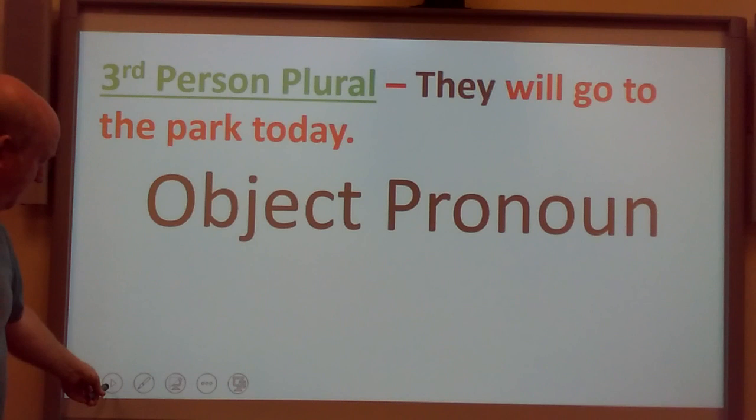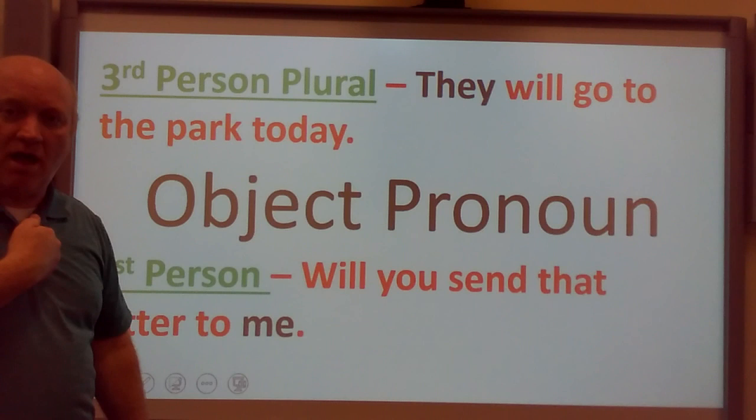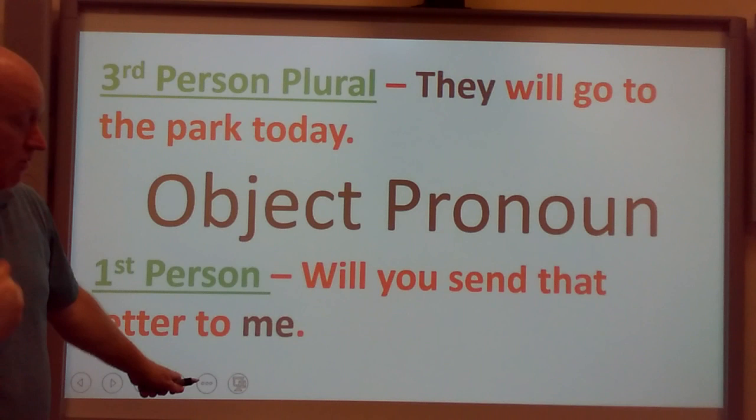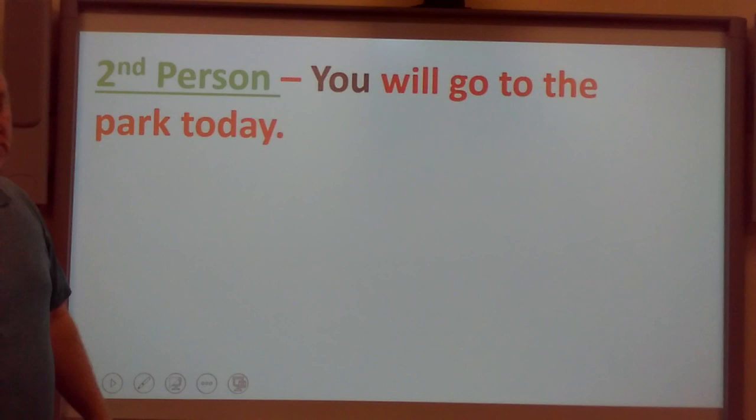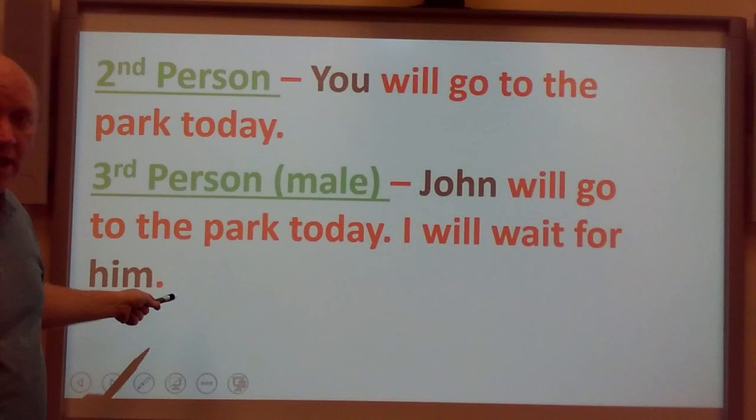Object pronoun. First person: 'Will you send that letter to me?' I'm the object pronoun. Second person: 'You will go to the park today' — as we see, the word 'you' doesn't change. Third person, male: 'John will go to the park today. I will wait for him.' 'Him' is an object pronoun referring to John.